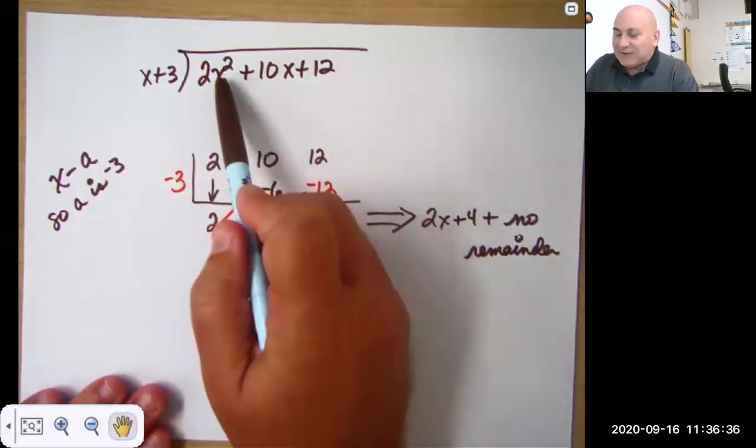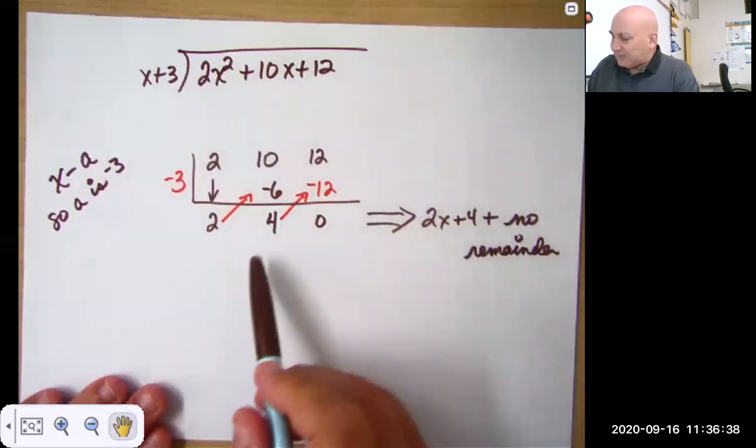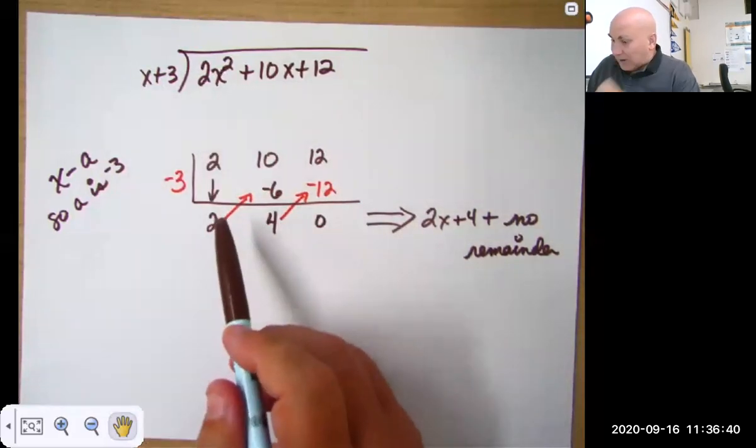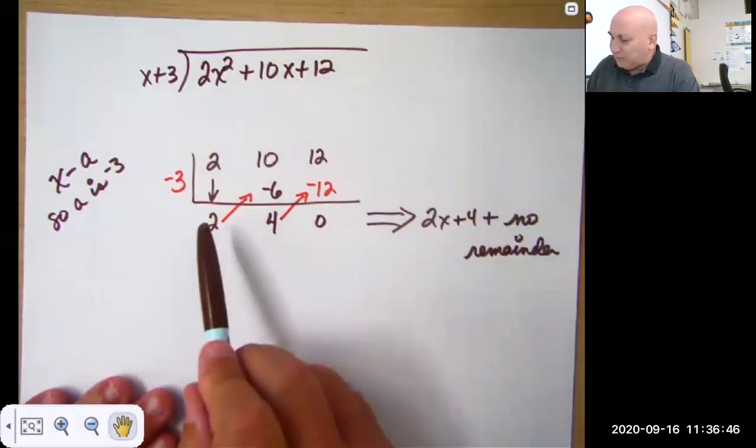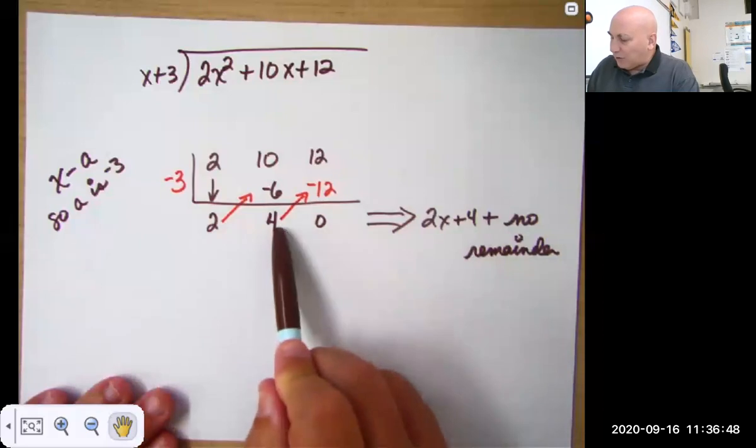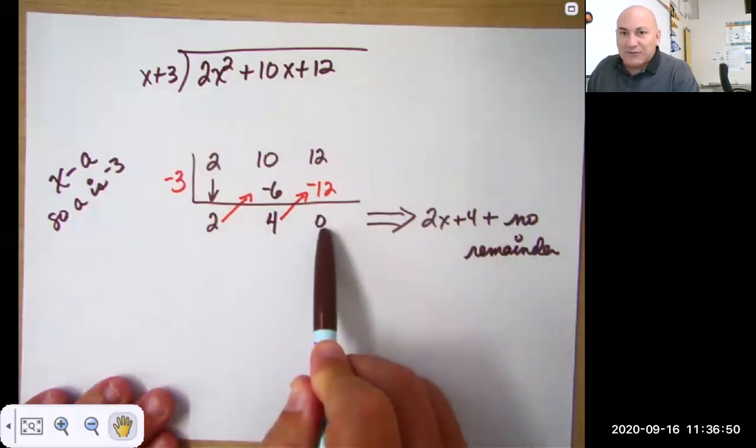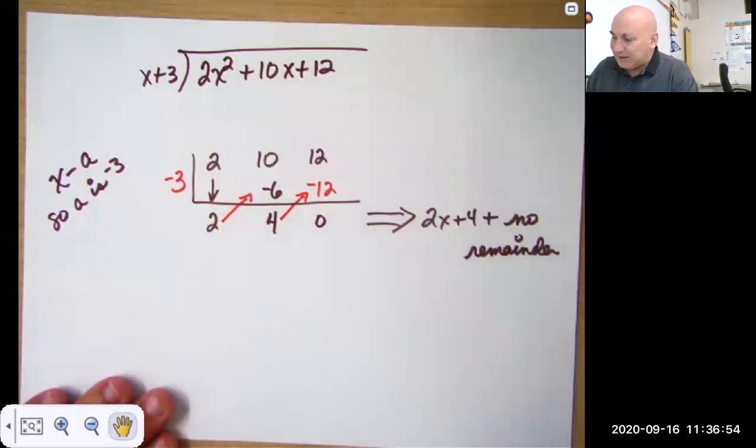So because I've divided an x squared by an x, I know I'm going to get something x as my divisor. So this means 2x plus 4 plus a remainder of 0, which is just what we got on the last slide.